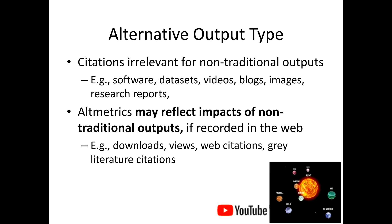Altmetrics may reflect impacts of non-traditional outputs if these impacts are recorded on the web somewhere. For example, downloads, view counts, web citations, or grey literature citations might point to non-traditional outputs.